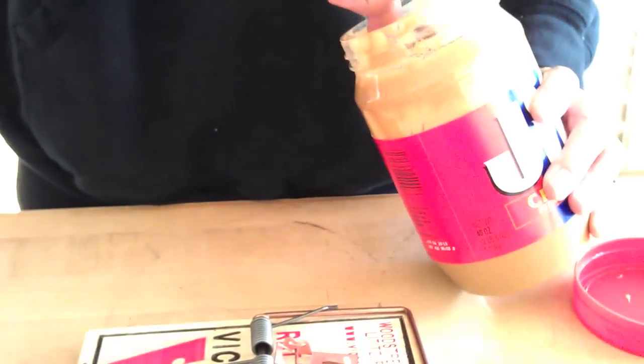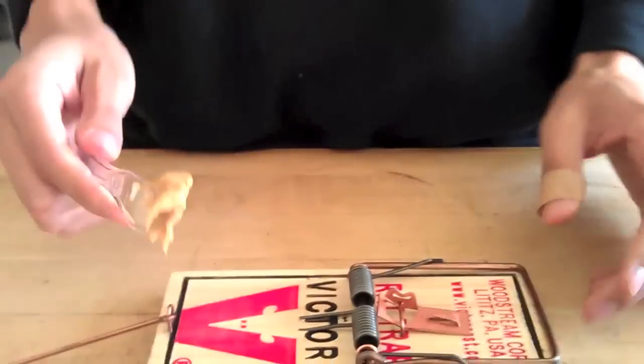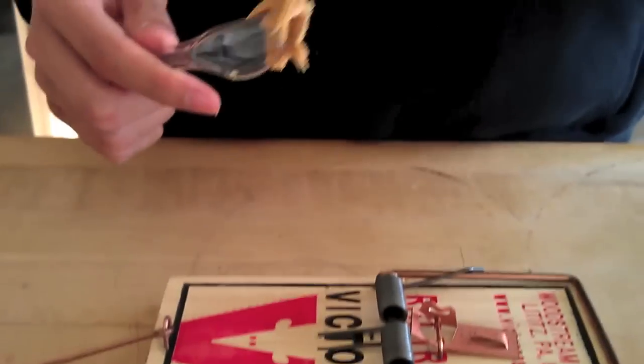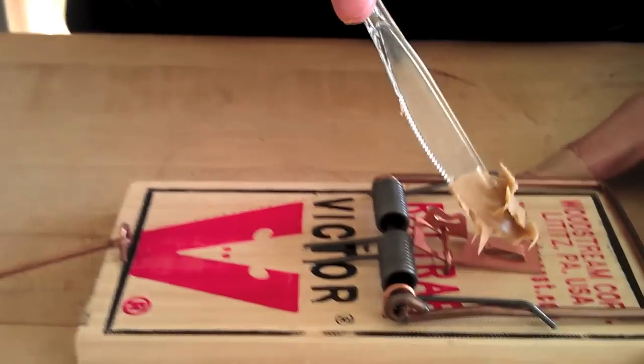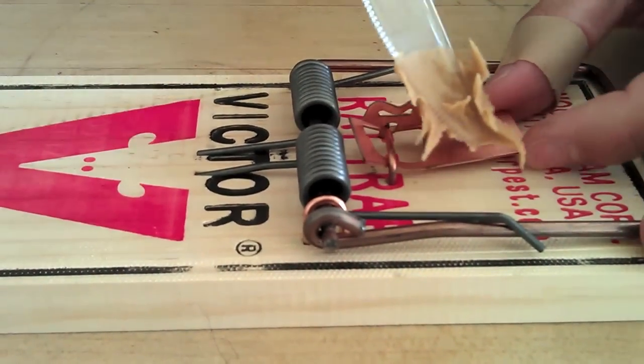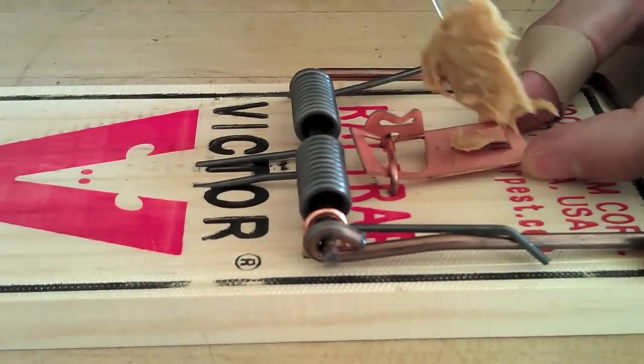Get a little bit of the peanut butter out. You don't want to put too much on the trap because you only need a little bit. If you put too much, you'll be feeding the rats and making them bigger. And you don't want that.